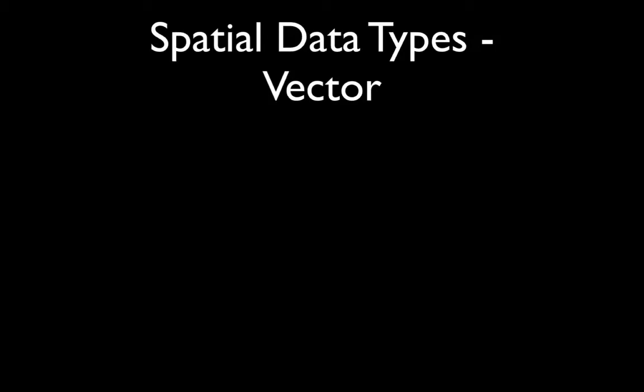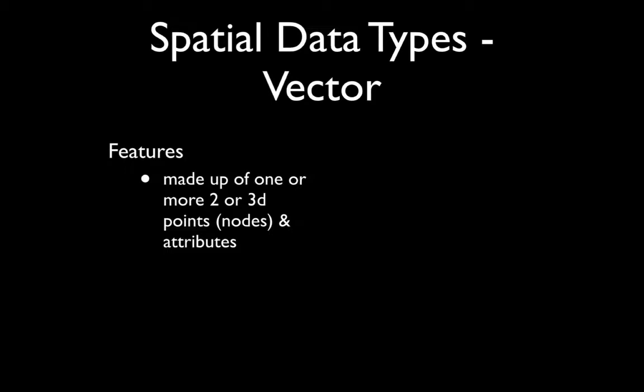So as we're talking about vector data, those data are often referred to in terms of features, where those features are defined in terms of geometries that are defined by one or more two- or three-dimensional points that are connected to each other in some way if there are more than one, and attributes that are associated with those geometries. So features basically consist of geometries of nodes linked to each other and their associated attributes.